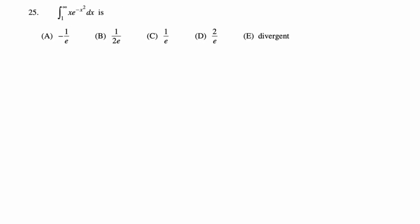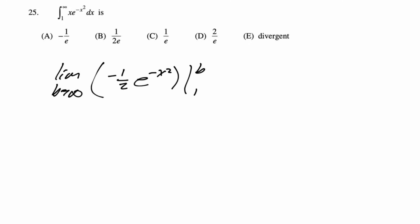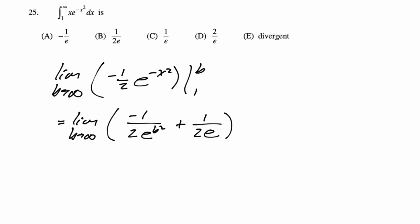This is an improper integral — it might diverge. We take the limit as B → ∞. Using u-substitution with u = −x², there's a −2 inside, so put −1/2 outside. Evaluate from 1 to B: write it as 1/e^(B²) and 1/e. As B → ∞, the first term goes to zero, leaving 1/(2e). Answer is B.